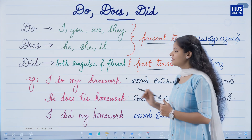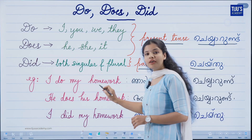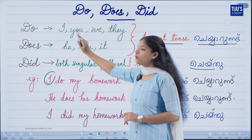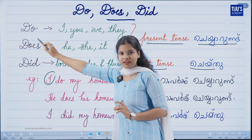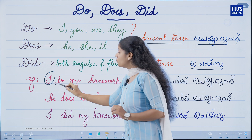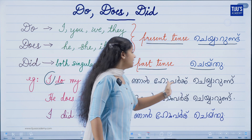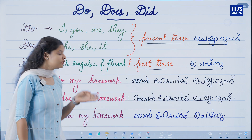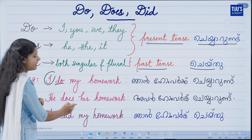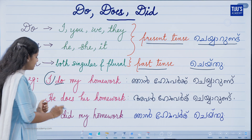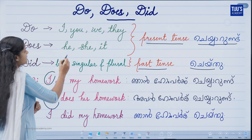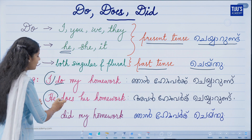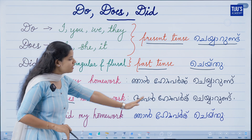Now let's look at the examples. The first one: 'I do my homework.' Here, I is considered plural in usage, so we use do. Similarly, 'he does his homework.' The subject here is singular — he — so we use does.